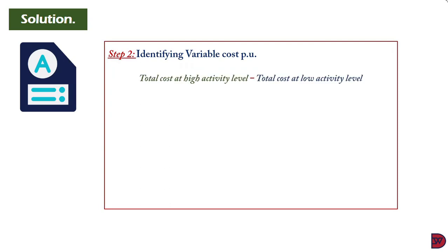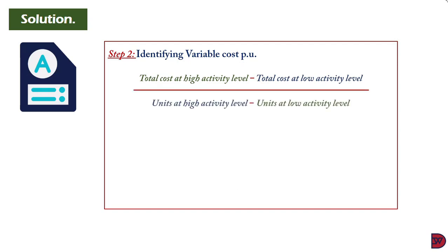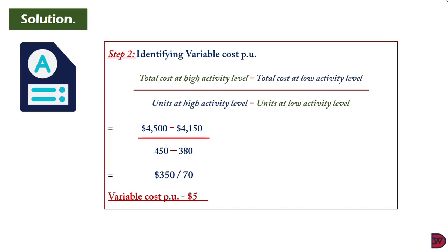We now calculate variable cost per unit: total cost at the highest activity level less total cost at the lowest activity level, divided by units at the highest level less units at the lowest level. That is ($4,500 − $4,150) ÷ (450 − 380) = $350 ÷ 70, giving a variable cost per unit of $5.